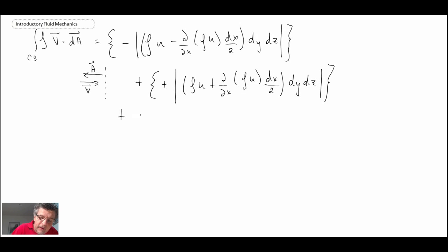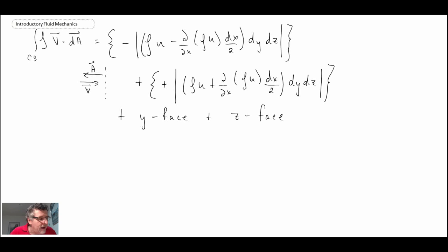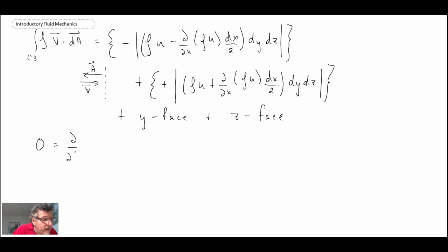Similarly, we do the same for the y-face and again for the z-face. When we expand all of this for the x, y, and z faces and bring in the time rate of change of mass of the control volume, our continuity equation for our little element starts to look something like this.